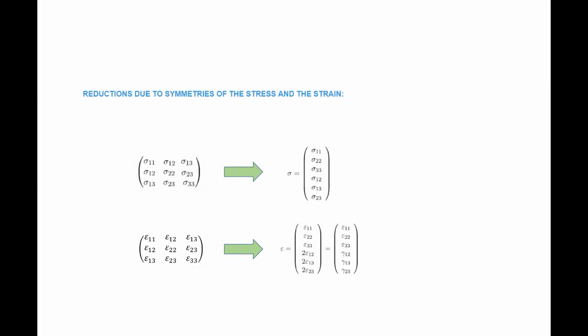Fortunately we can reduce the number of constants because we know some things about the stress and the strain. The first type of reduction is because we know that both the stress and the strain are symmetric. So we can think of the stress as having six independent components rather than nine: sigma_11, sigma_22, sigma_33, sigma_12, sigma_13, and sigma_23. The stress is a matrix, but we're going to look at the six components as a vector representation of the stress.